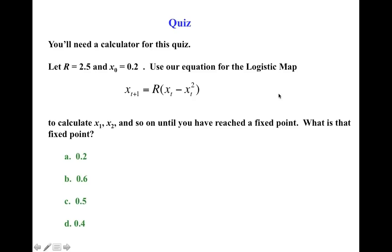Now it's time for our next quiz. You'll need a calculator for this quiz. Set r equal 2.5 and x0 equal to 0.2. Then use the equation for the logistic map, filling in 2.5 for r and starting out with x0 of 0.2 to calculate x1, x2, x3, and so on until you've reached a fixed point. What is that fixed point? And recall that a fixed point is a value of x such that x sub t is the same as x sub t+1.